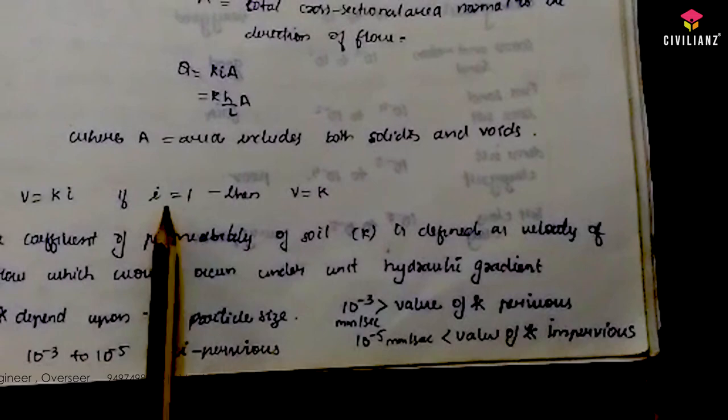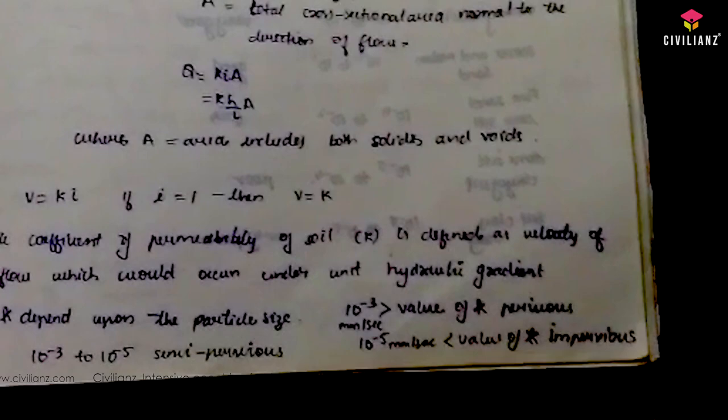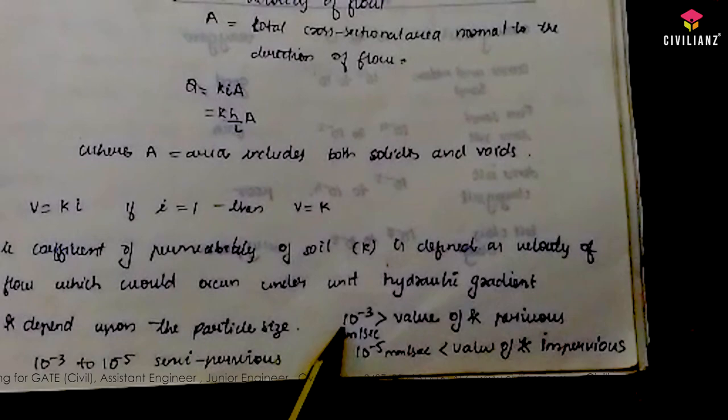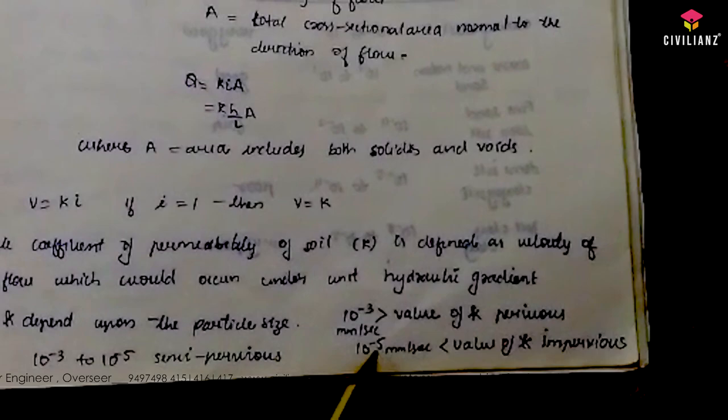The coefficient of permeability of soil is defined as the velocity of flow which would occur under unit hydraulic gradient — that is, when the hydraulic gradient becomes unity, the velocity equals the coefficient of permeability. A k value greater than 10⁻³ mm/s is pervious; less than 10⁻⁵ mm/s is impervious.